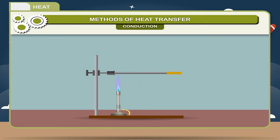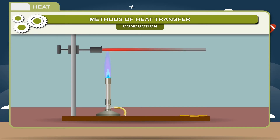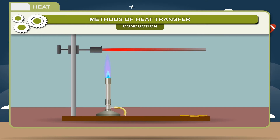After some time you will observe that the wax starts melting at the other end which was not heated. This means that heat has reached the other end where the wax was fixed, showing that heat is transported from the hot end to the cold end because of the difference in temperature.